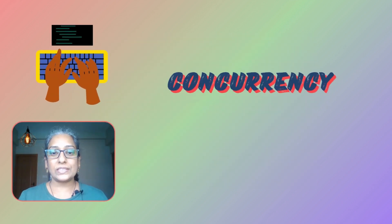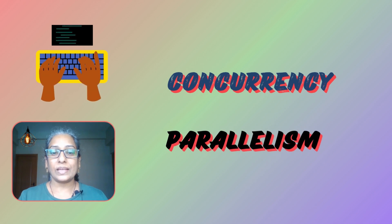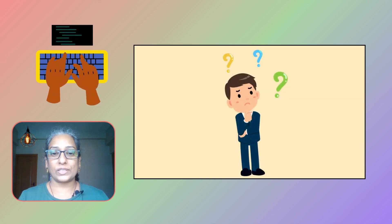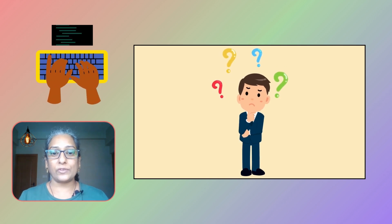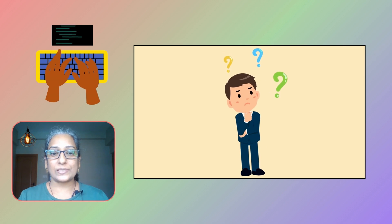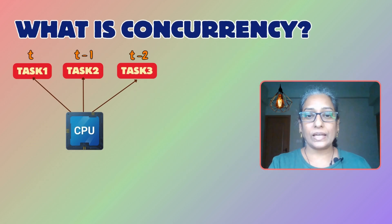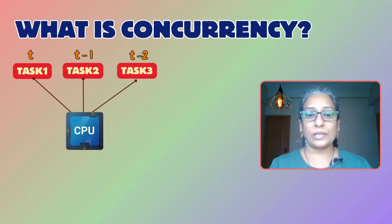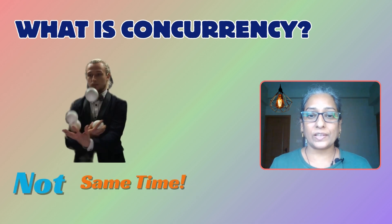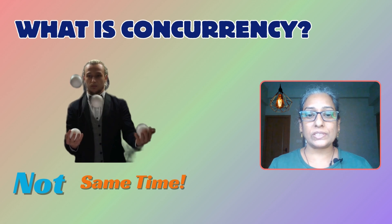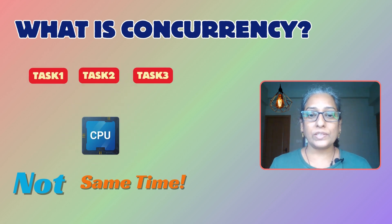In the world of programming, we often hear the terms concurrency and parallelism. They can be pretty confusing because, while they sound similar, they actually mean different things. Concurrency is all about handling multiple tasks at once, but it does not necessarily mean doing them at the same time — it refers to managing multiple tasks, often using a single processor to switch between tasks.